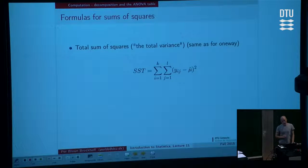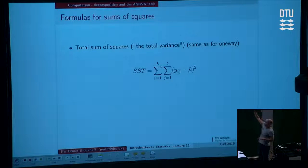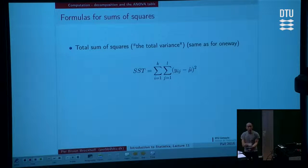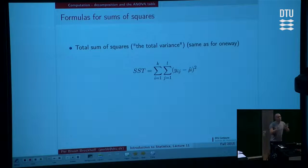I am just quantifying now how large are the different variabilities. First of all, there is a total variability. The total variability, I take each observation, compare it with the overall mean, square it and add them all up, as if I was going to compute the variance on everything. I just don't divide by anything, I just do the sum of squares. That's the total variability.